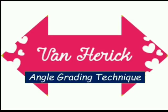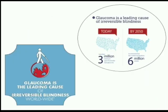Let us discuss the Van Herrick Technique. The Van Herrick method of estimating the peripheral angle is a commonly undertaken screening test for glaucoma, which is one of the leading causes of irreversible blindness in the world. This technique is applicable to the interest of the eye care practitioner as it permits a quick and simple screening alternative to the conventional gonioscopy examination. However, it should not be used as a replacement for gonioscopy.